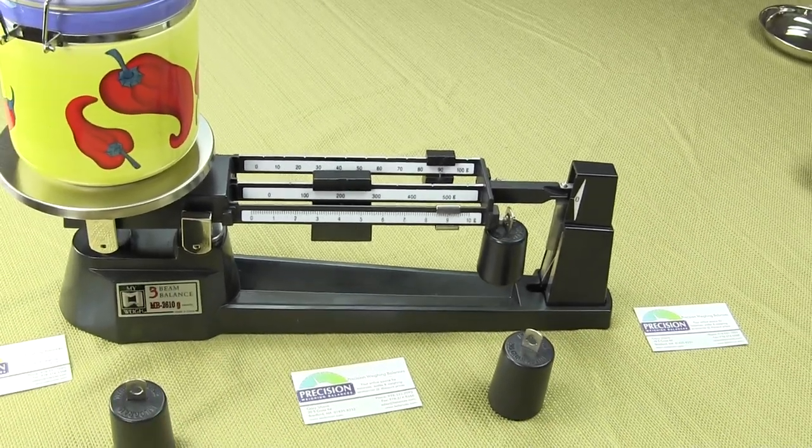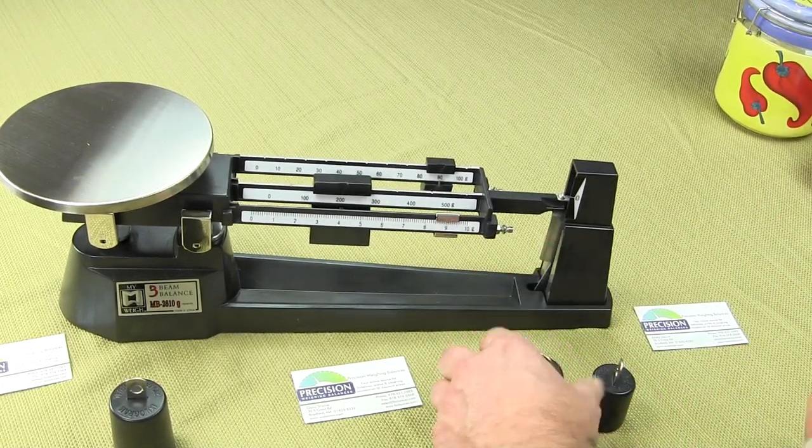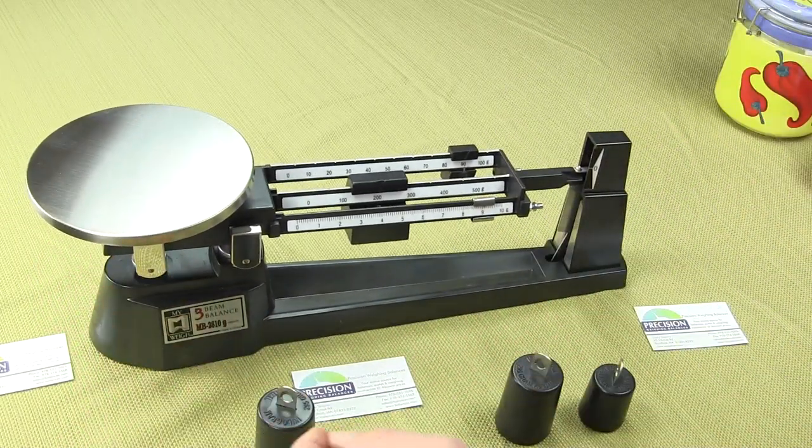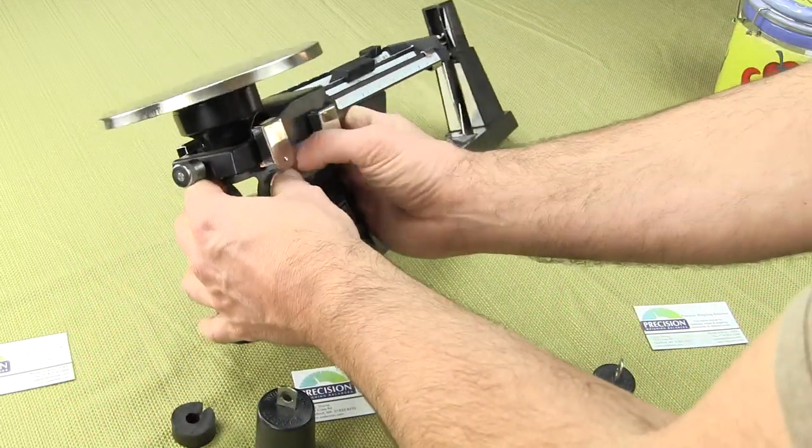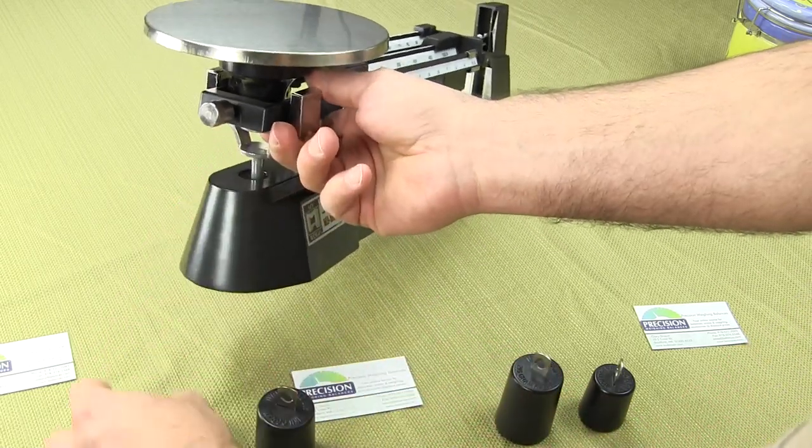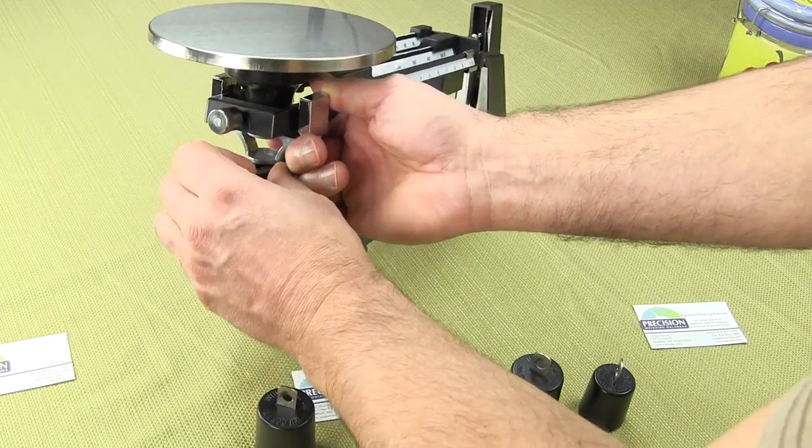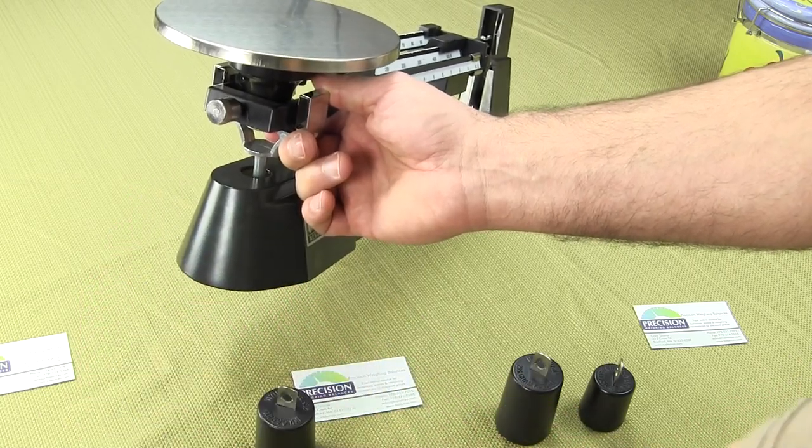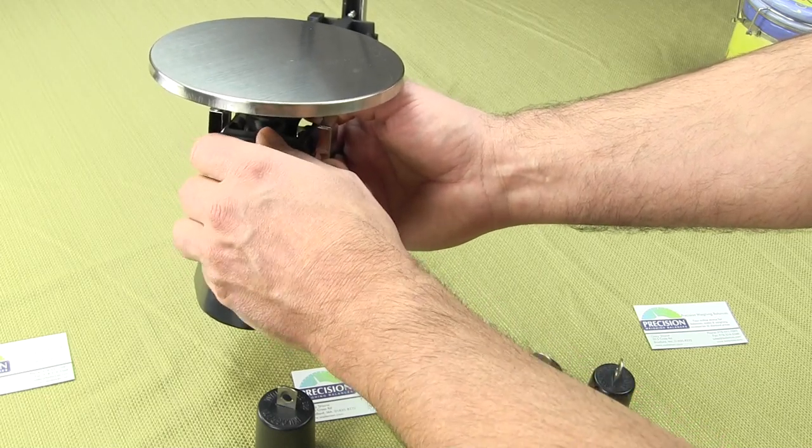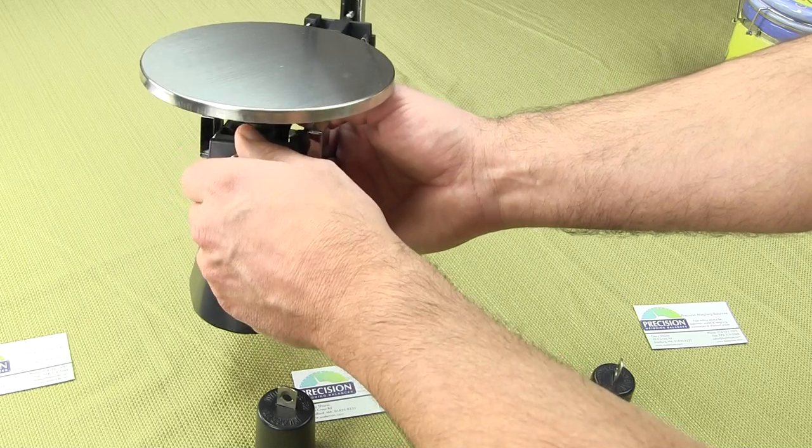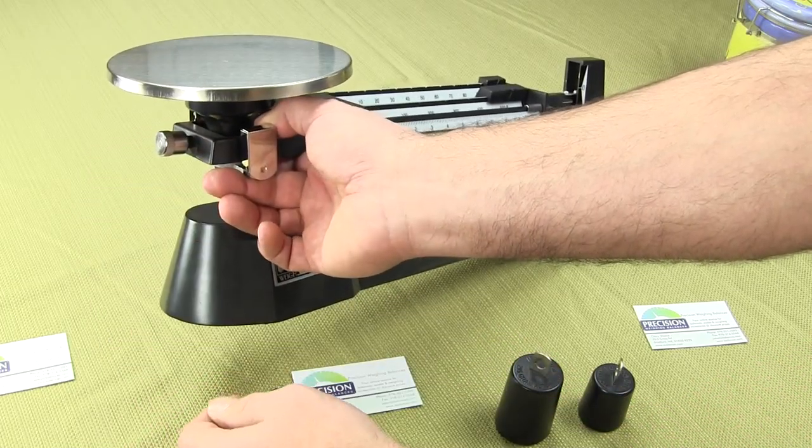I want to go over some more features of the three beam balance. When you get the balance there's going to be a washer on the rear that you have to remove—this is to protect the scale in transit. There's a large rubber washer or grommet that just pulls right out. If you look at the very end there's a curl knob here to adjust the balance. You can raise the beam up and down by turning it clockwise or counterclockwise. This is the curl knob on the rear of the three beam balance.